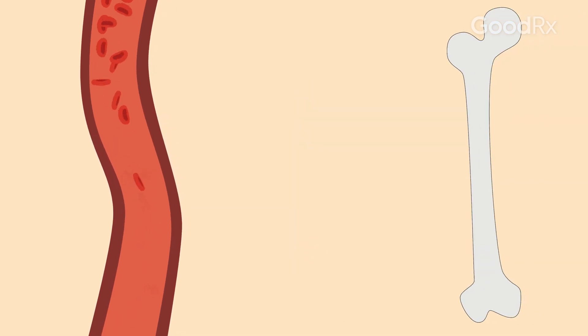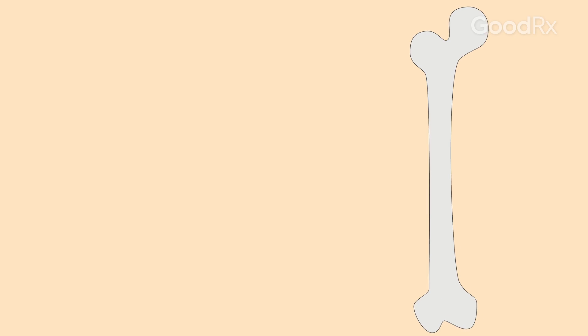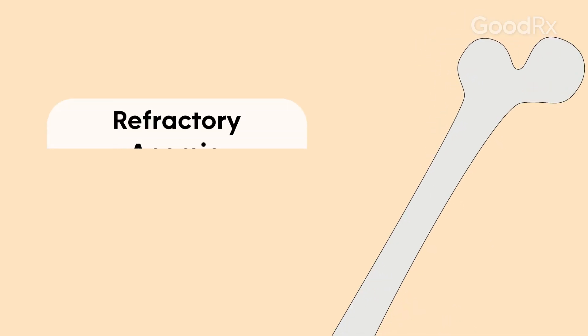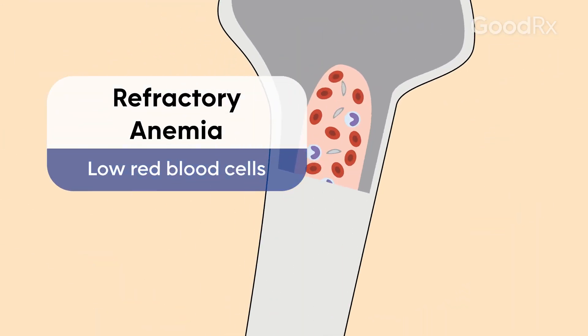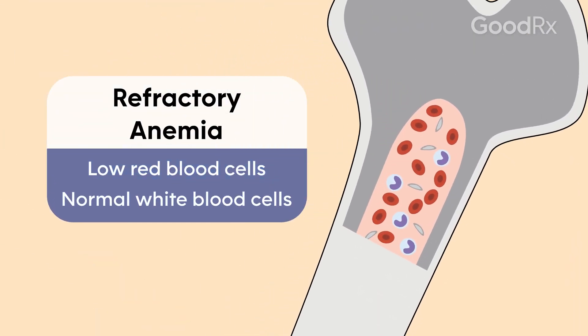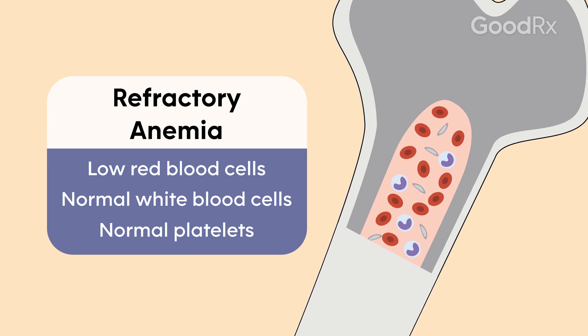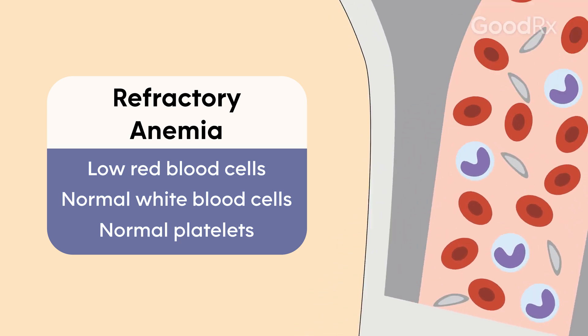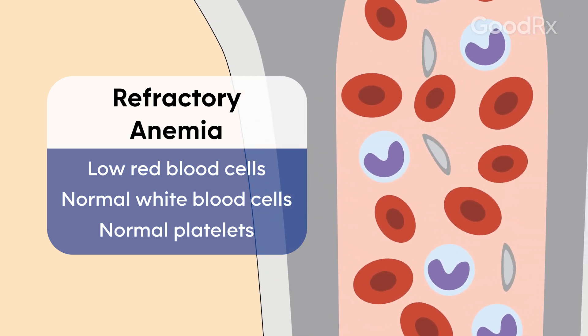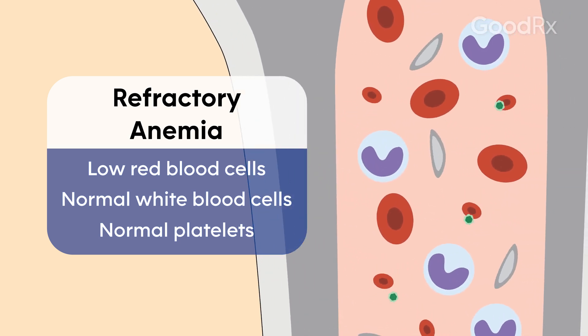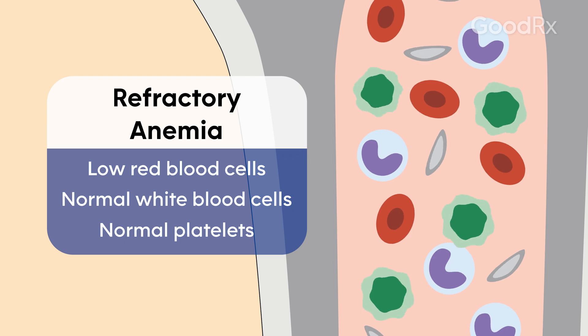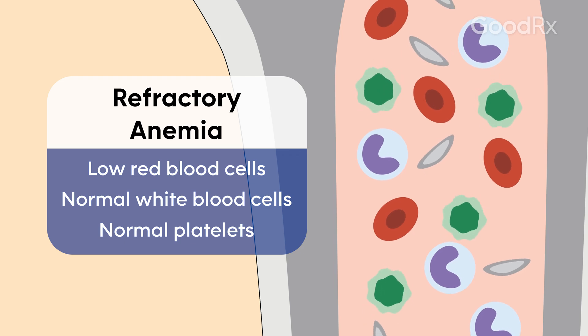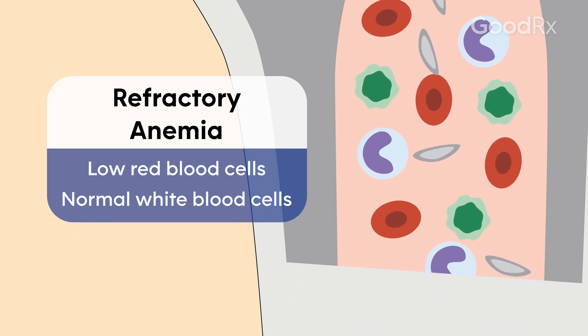There are several classes of anemia related to myelodysplastic syndromes. One of the most common is refractory anemia, which is when the red blood cells are crowded out by the myelodysplastic syndrome bad cells.